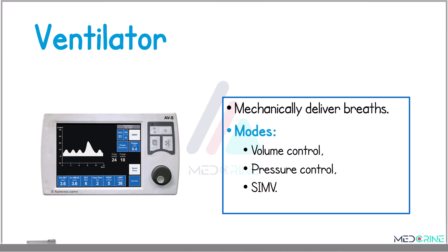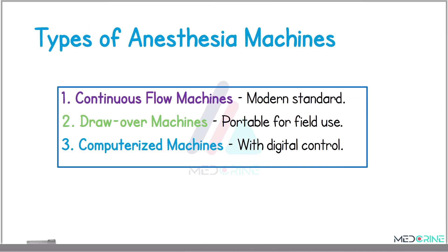A ventilator delivers breaths when the patient is under general anesthesia. There are a number of modes that can be set in this ventilator, for example the volume control mode, the pressure control mode, and synchronized intermittent mandatory ventilation, or SIMV mode.